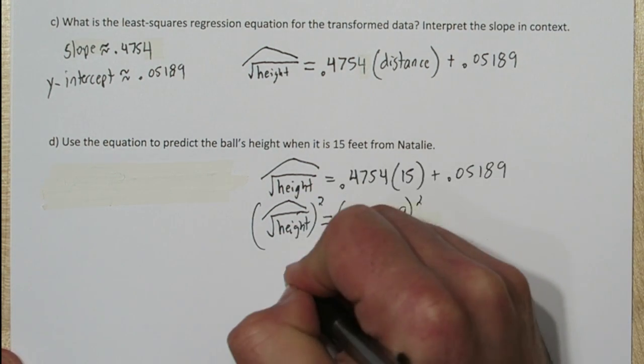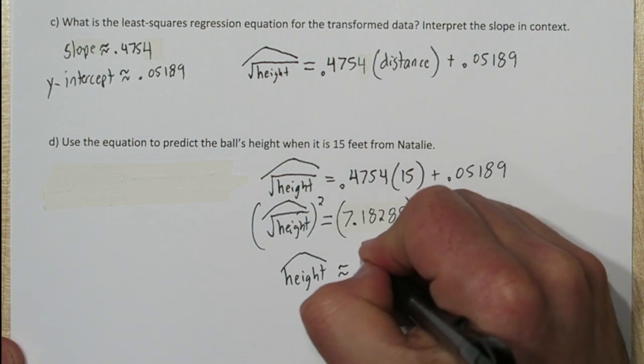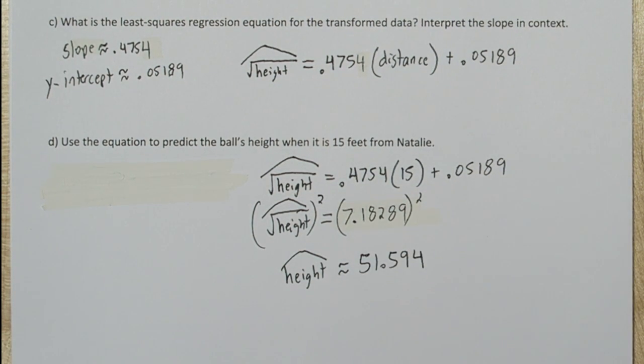We just need to square this value to get our actual height prediction. So our predicted height is about 0.51594.